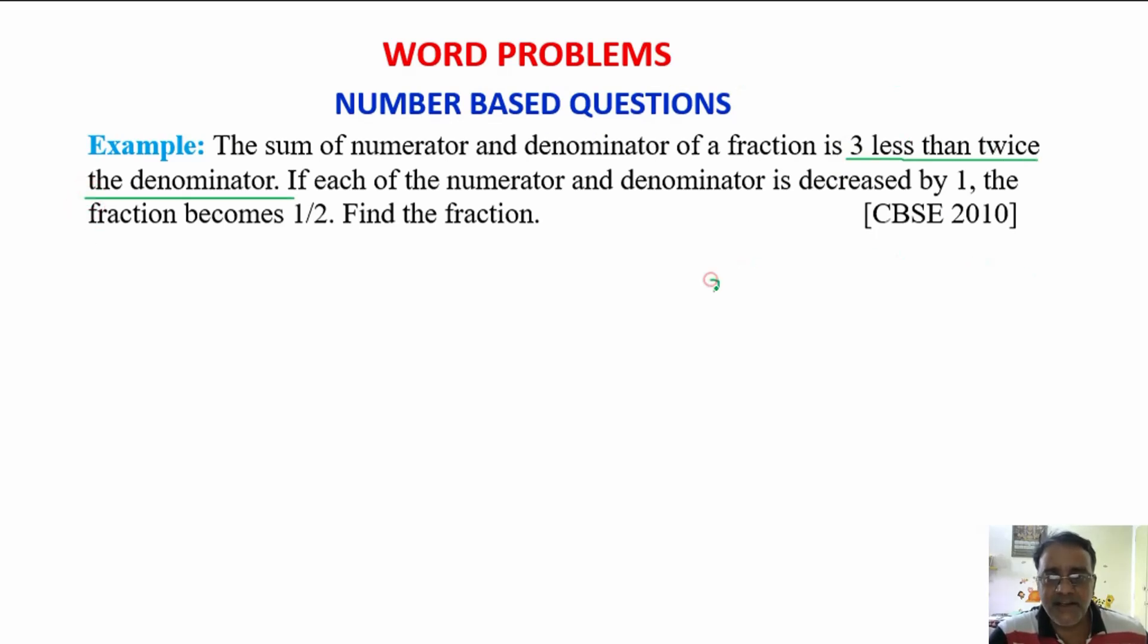Suppose if you are writing a fraction x upon y, the sum of the numerator and denominator is x plus y and it is 3 less than - 3 less than means minus 3 - twice the denominator, twice the denominator means 2 times of y.